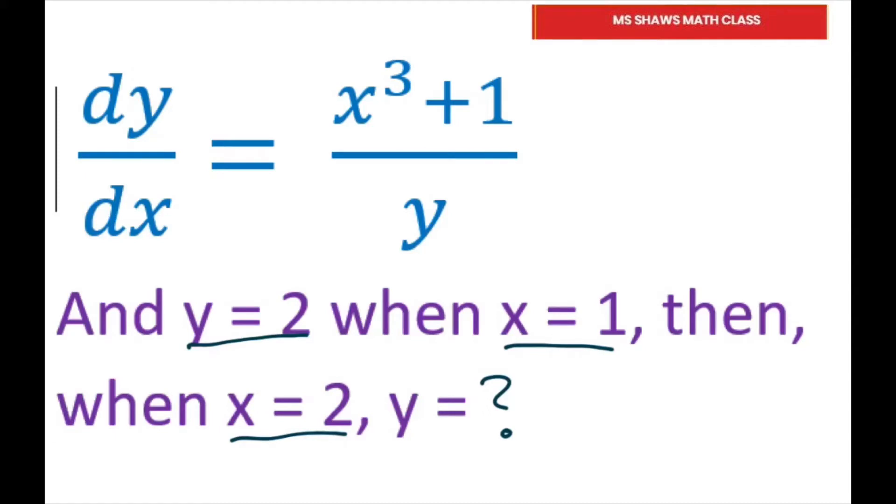So what I want to do here is just move this y up here, move the dx up here, so cross multiplying in a sense. You have y dy equals x cubed plus 1 times dx.